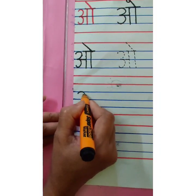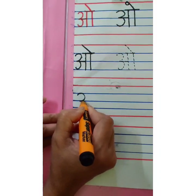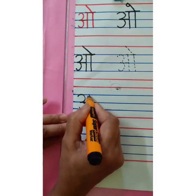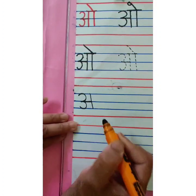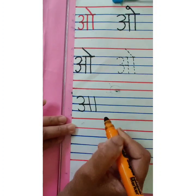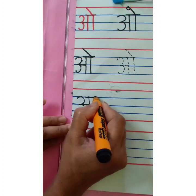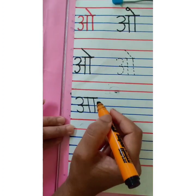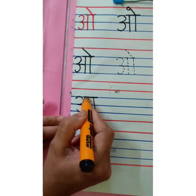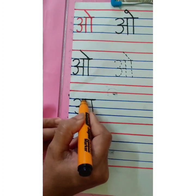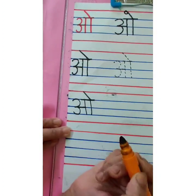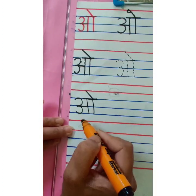Start with the first blue line. Write number 3. Then sleeping line. Standing line. This is A. One more standing line. This is A. Overhead sleeping line. And then matra — on which line? On this line. Slanting line. This is O.